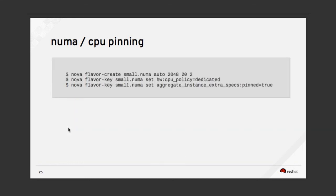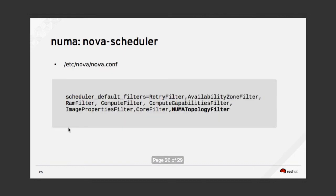To set up NUMA CPU pinning: create a flavor, set up the flavor properties, and then boot the instance. You need to enable the scheduler to use the NUMA topology filter by enabling it in nova.conf.